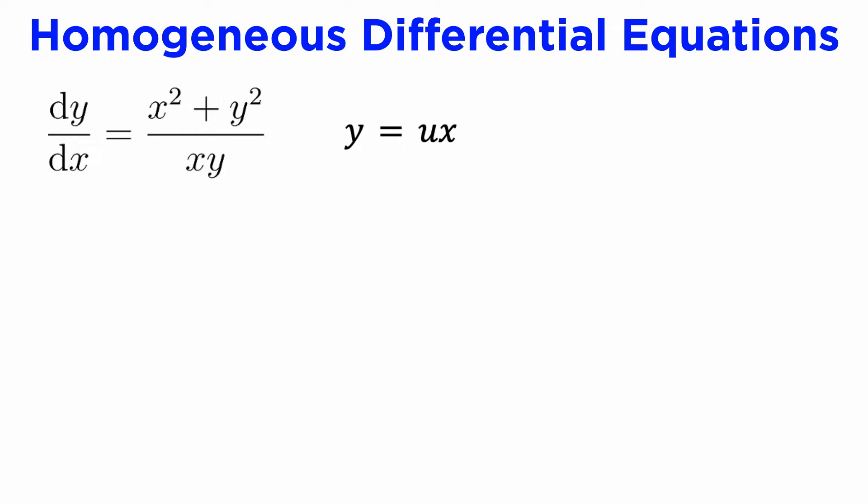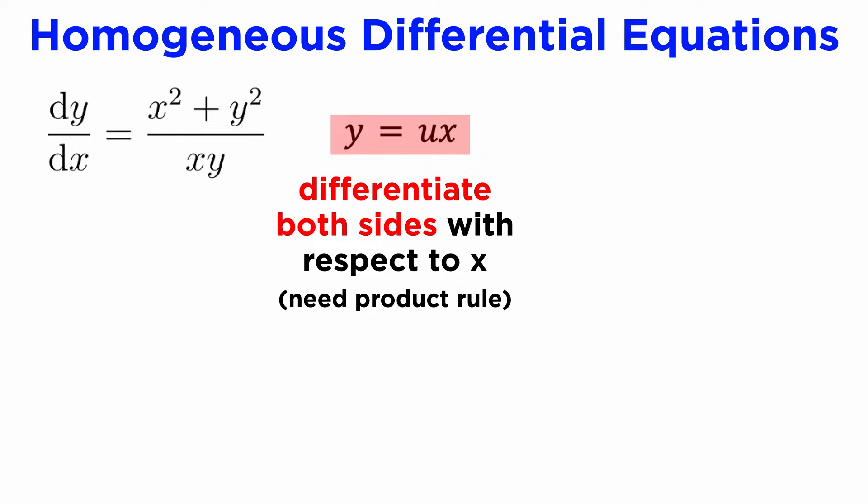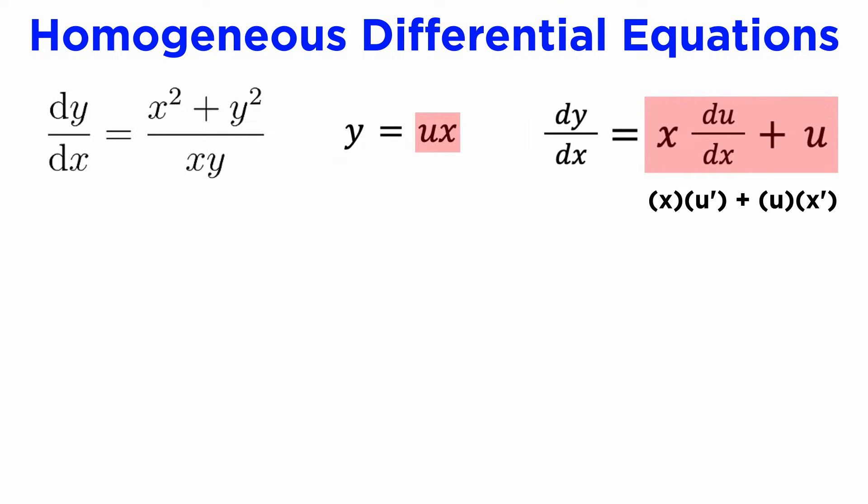So the way to solve it is to use the homogeneous substitution y equals ux, where u is a function of x, to transform our DE from one where the dependent variable is y into one where the dependent variable is u. In order to eliminate y from our DE, we need expressions for both the y and dy/dx terms that appear in our DE. We know y in terms of u, because that's our substitution, y equals ux. But how can we get dy/dx in terms of u? If we differentiate both sides of our substitution y equals ux with respect to x using the product rule, recalling that u is a function of x, we get dy/dx equals x times du/dx plus u.